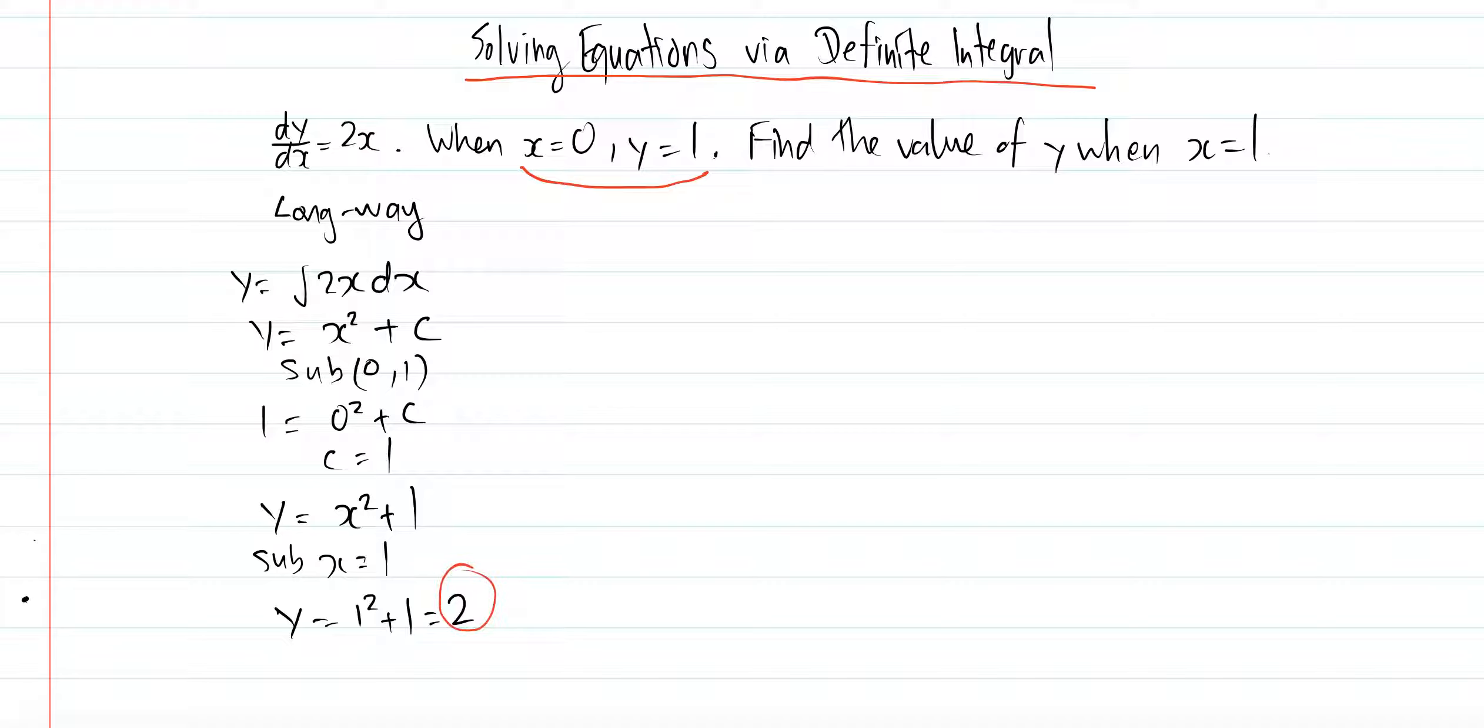So your final answer is when x equals 1, y equals 2. I'll show you the shortcut way of doing this. This one's pretty simple—you can do it really fast even using the long way because the equation isn't that hard. The shortcut: if you're given a derivative, you're given a point, and you're asked to find y when x equals something—this only works for these types of questions.